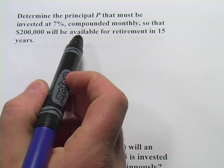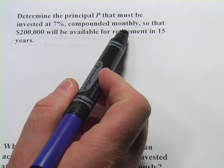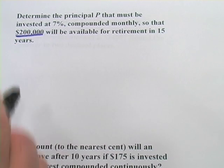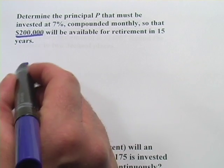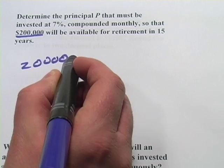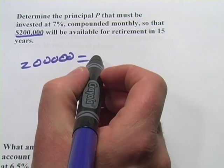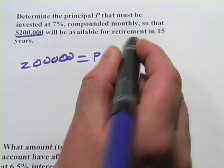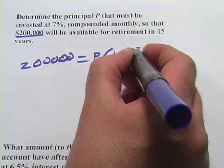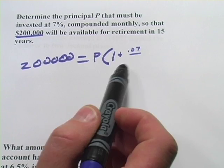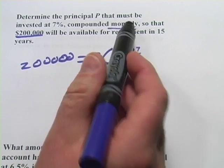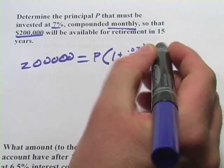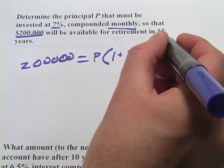So this first one says, determine the principal that must be invested at 7%, compounded monthly, so that $200,000 will be available for retirement in 15 years. So the amount they want at the end is $200,000. So that's going to sub in for our A in the formula. And then we have our principal. And that's what we're trying to figure out. So we'll just leave that as P. And then it's 1 plus the rate, which is .07, divided by the number of times it's compounded per time period. So we're compounding monthly, and it's an annual rate. So it's going to be 12 times per year. And then we have the number of times it's compounded times the number of years, which is 15.